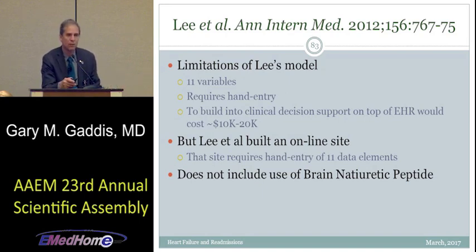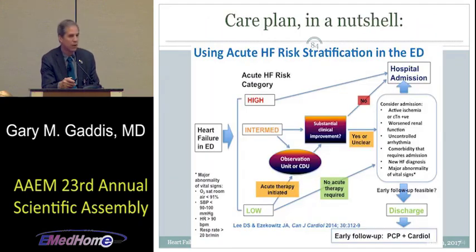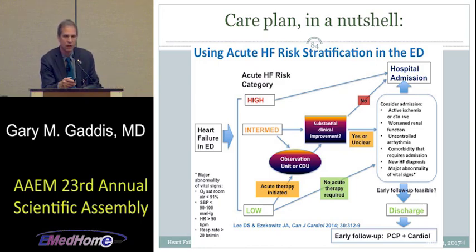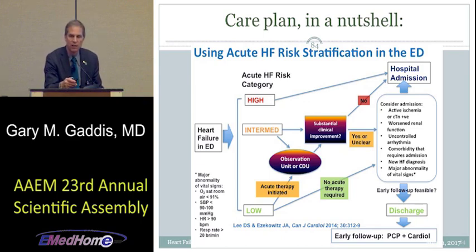The overall vision going forward is: the patient shows up, you initiate code heart failure care, and eventually if they look improved, you apply Lee's rule to see whether the patient qualifies to go home. If you can send even 1% more of your heart failure patients home, you can make a huge difference in your hospital's percentile ranking for heart failure readmissions and potentially move from the penalty zone to the non-penalty zone.